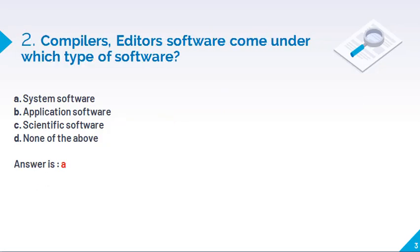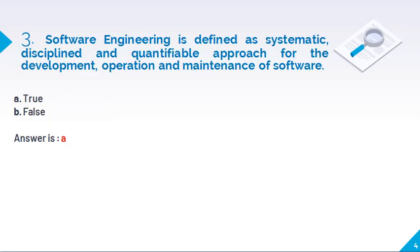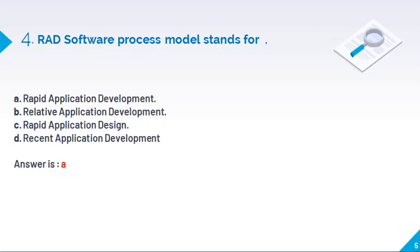The second question is compiler and editor software come under which type of software. So that is system software. Then third question is software engineering is defined as a systematic, disciplined and quantifiable approach for the development, operation and maintenance of software. It is true or false. So yes, we are using the software engineering to develop the particular software in very perfect manner. So if we do this kind of step by step process, at the end we are getting the good product in terms of the software or the website.